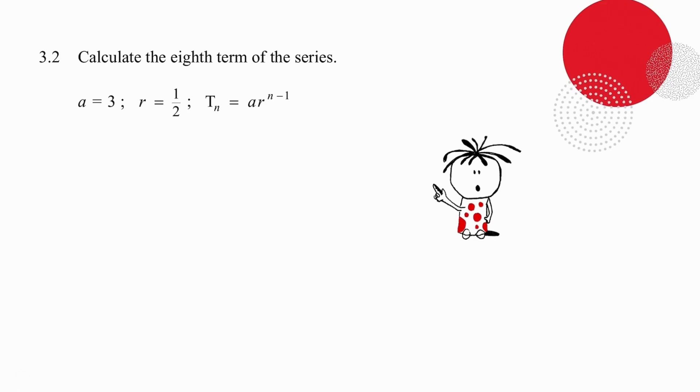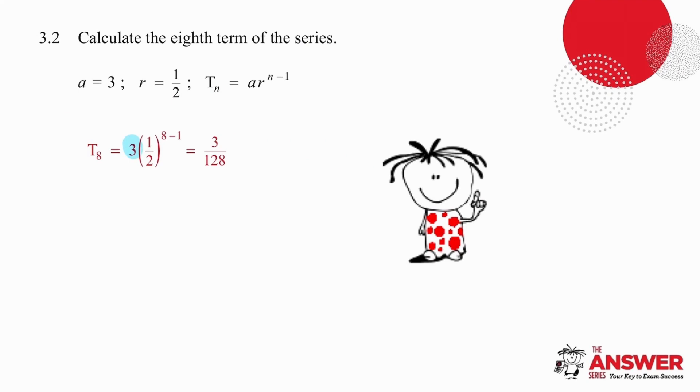In question 3.2, you have the same a value that you've just worked out, a equals 3 and the r value they gave you. And now you're working out the eighth term. So you're using the Tn formula. Tn equals a r to the n minus 1. Substitute and work out the answer. 3 multiplied by a half to the power of 7 gives you the result of 3 over 128. Remember, do not multiply 3 by the half. First work out a half to the 7, which is 1 over 128, and then multiply by 3.